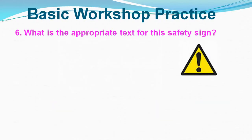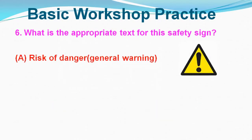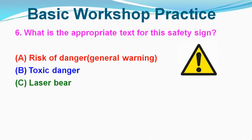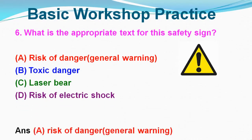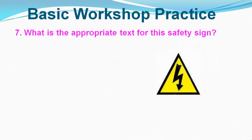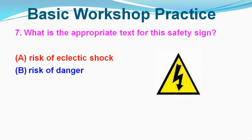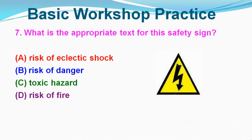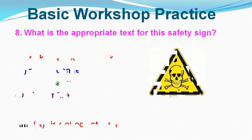Question No. 6: What is the appropriate text for this safety sign? Option A: Risk of Danger, Option B: Toxic Danger, Option C: Laser Beam, Option D: Risk of Electric Shock. Correct answer is Option A, Risk of Danger. Question No. 7: What is the appropriate text for these safety signs? Option A: Risk of Electric Shock, Option C: Toxic Hazard, Option D: Risk of Fire. Correct answer is Option A, Risk of Electric Shock.